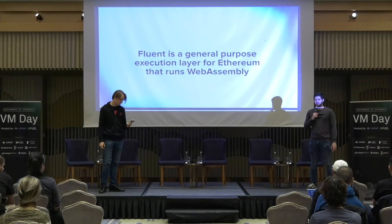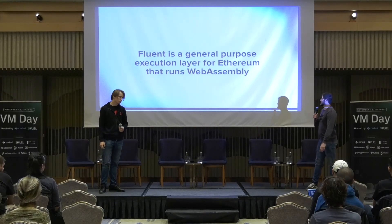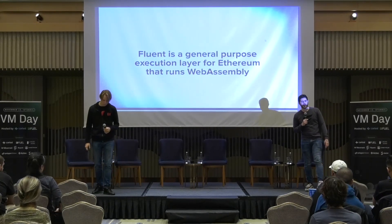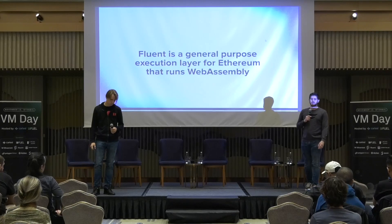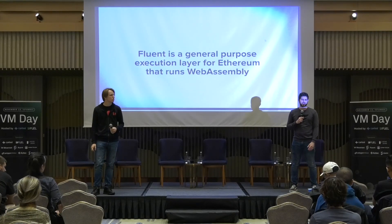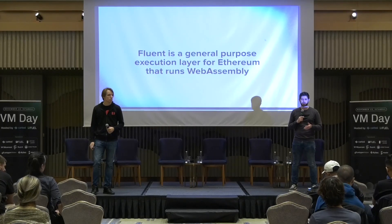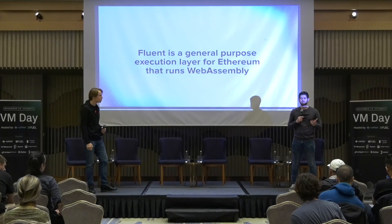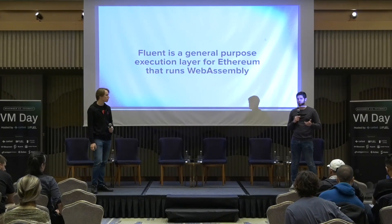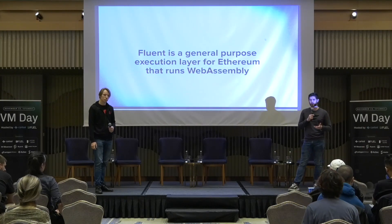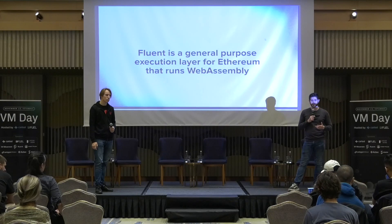We're introducing Fluent. Fluent is a general purpose execution layer for Ethereum. Our broader idea behind this is that there are about 25 million developers out there, and we think we should go to where they are and not make them learn all these blockchain-specific details.